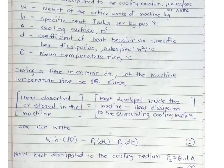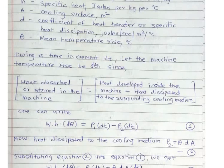During a time increment DT, let the machine temperature rise by D theta. That means when the time is changing by DT, temperature rises by D theta. Using the following heat balance equation — heat absorbed or stored in the machine equals heat developed inside the machine minus heat dissipated to the surrounding cooling medium — we can write expression number one: W into H into D theta equals P1 DT minus P2 DT.